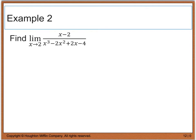Example 2 says to find the limit of x minus 2 divided by x cubed minus 2x squared plus 2x minus 4. If we go ahead and plug a 2 in for both the numerator and the denominator, that's going to give me 0 divided by 2 cubed is 8, minus 2 times 2 squared, or 4, giving me 0, because I have 8 minus 8. Then I have plus 2 times 2 is 4, but I subtract another 4, so that gives me 0 as well. So I have the indeterminate form.